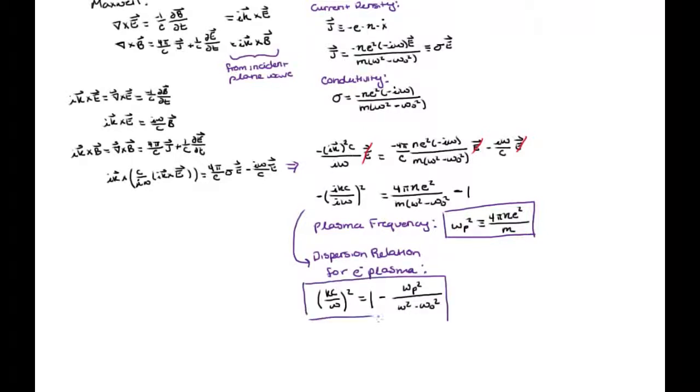We can take this one step further and look at this in terms of the index of refraction. In a diffuse plasma, omega naught goes to zero, and our index of refraction looks like this.